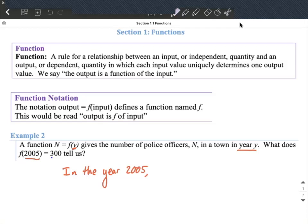well, what's our output? We have 300 as our output, that's occupying n spot in this case, and n represents the number of police officers. All right, so in the year 2005, this town has 300 police officers.